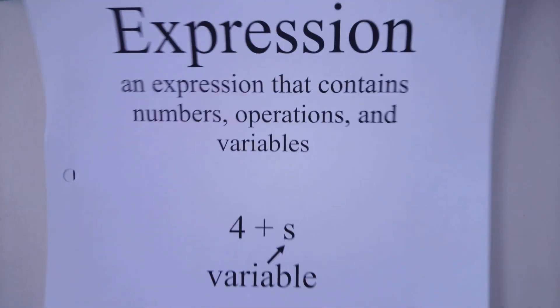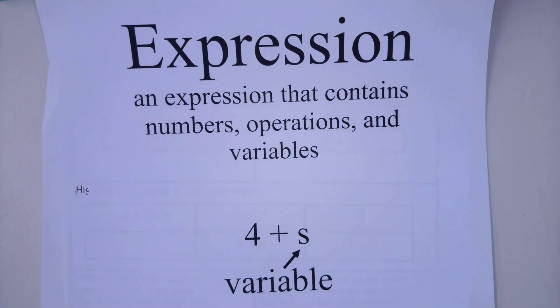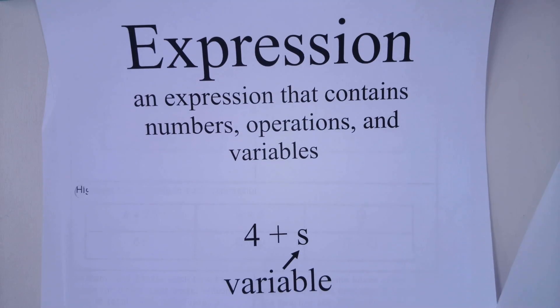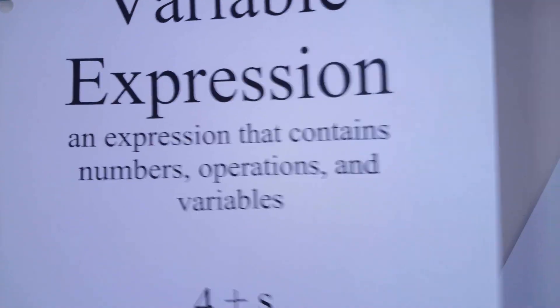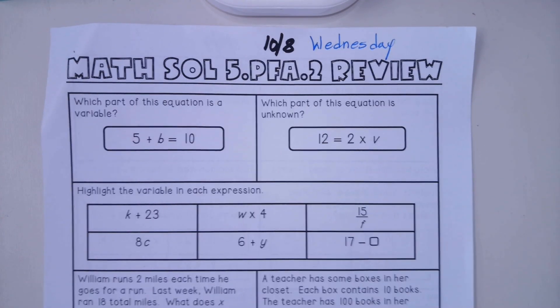A variable is an expression that we solve for an unknown. So in this case, s is something we do not know. We are going to be looking for the answer to what is s. The letter can change - it could be a, b, c, d, e, f, anything you want - but it will be an unknown number.